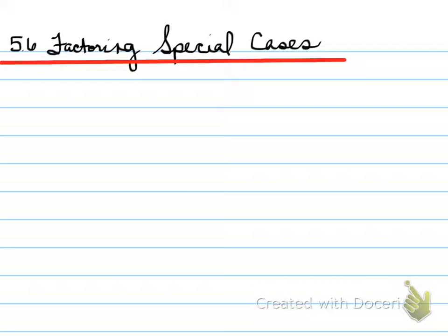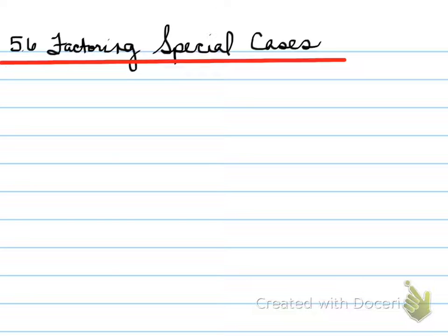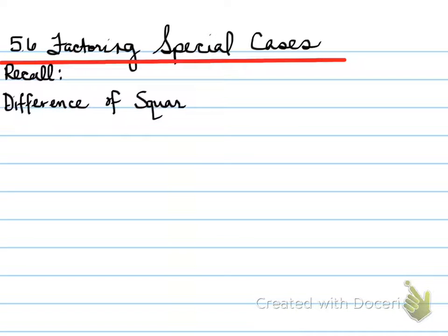We're looking at factoring special cases, section 5.6. Special cases we actually saw earlier in this unit when we were expanding. Those special cases were difference of squares and perfect squares. So difference of squares — what did it look like when we had originally a difference of squares? Here was the answer. Do you remember what the question looked like?